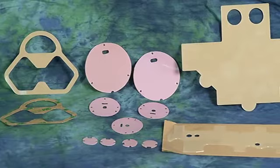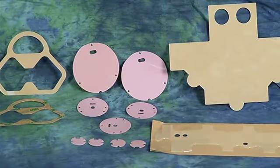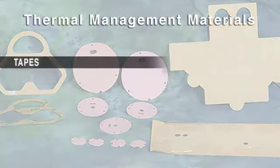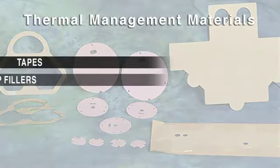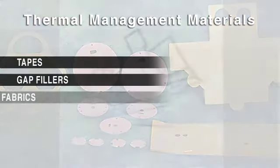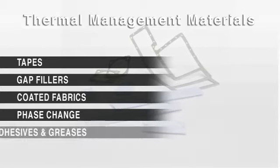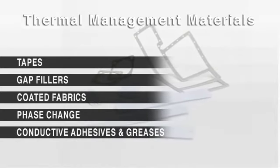Fabrico has access to a broad range of thermal management materials, including tapes, ceramic and metal-filled elastomers as gap fillers, coated fabrics, phase change materials, and conductive adhesives and greases.